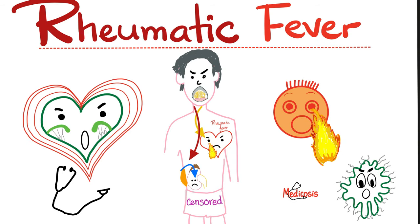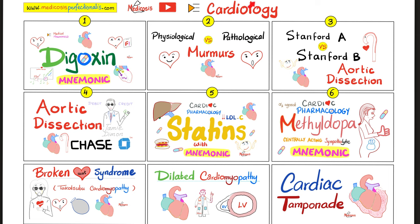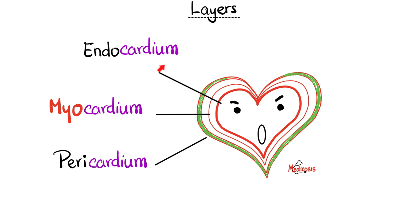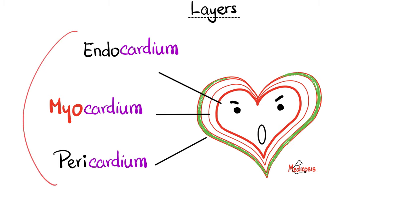Before you watch this video, please refer to my video called Rheumatic Fever, and you will find it in my cardiology playlist on my YouTube channel. Back to basics: here's the inner layer of the heart — endocardium, then the middle layer — myocardium, and the outer layer — pericardium. Rheumatic fever affects all three layers. It's a pan-carditis.